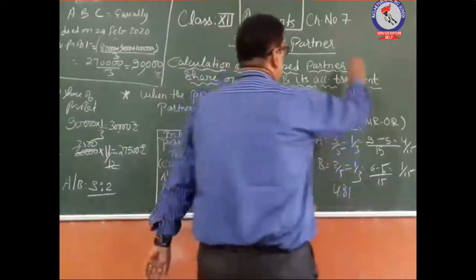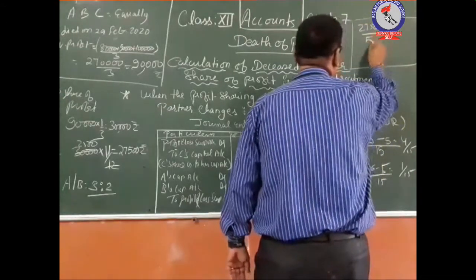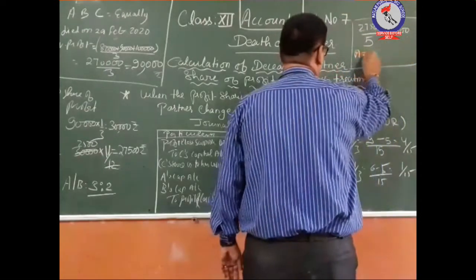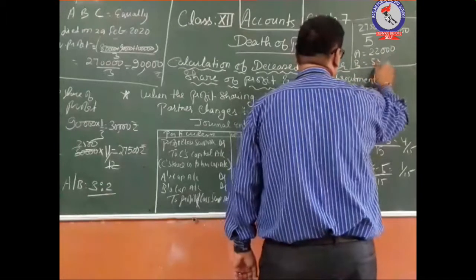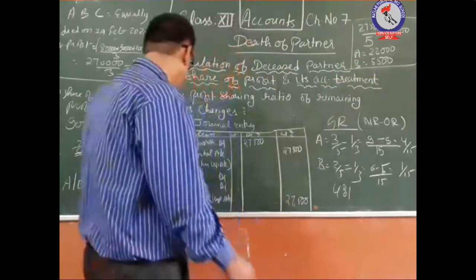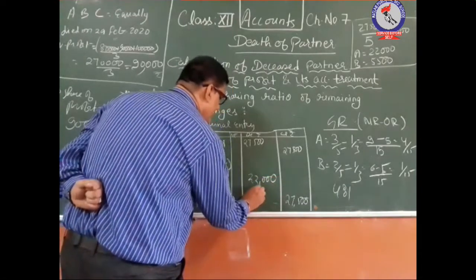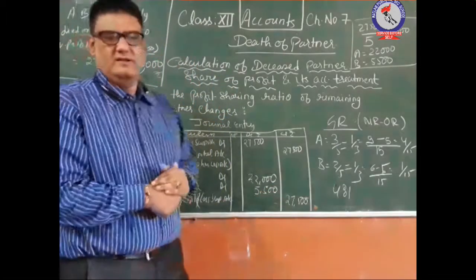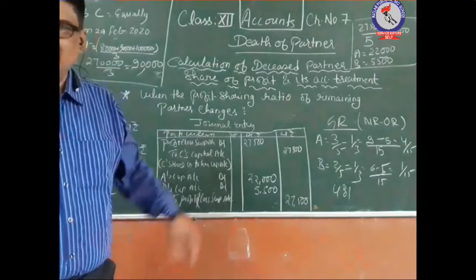27,500 divided by 5 gives one part as 5,500. So A will compensate 22,000 (4 parts) and B will compensate 5,500 (1 part) to the outgoing partner C. This is C's profit share adjusted in the gaining ratio.